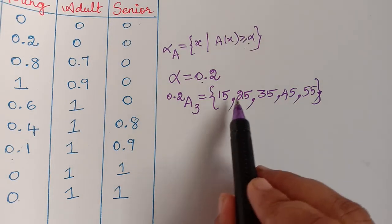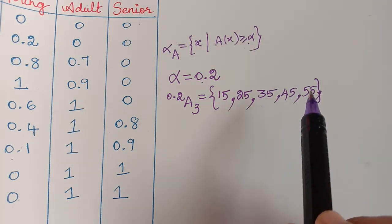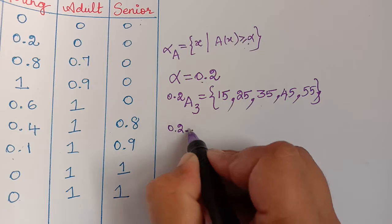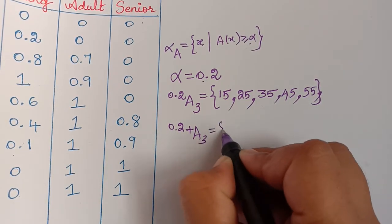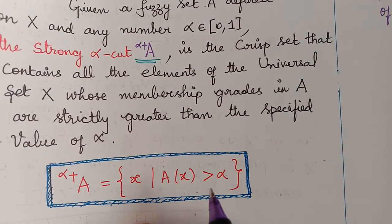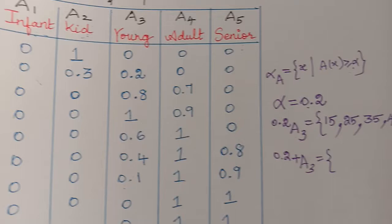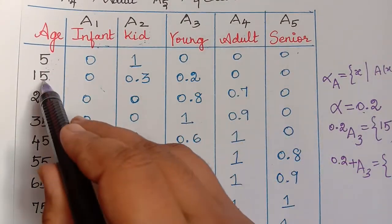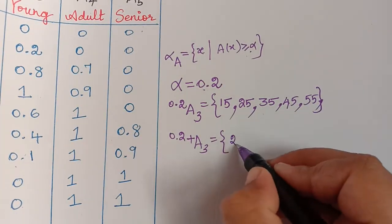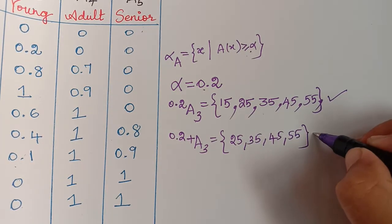For the strong alpha cut 0.2⁺-A3, we exclude membership grades equal to alpha. The only value equal to 0.2 is age 15, so we exclude it. The strong alpha cut is therefore {25, 35, 45, 55}. This illustrates the difference: alpha cut includes grades ≥ alpha, strong alpha cut includes grades strictly > alpha.